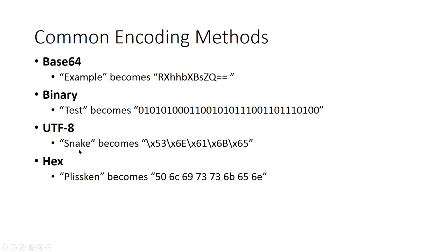UTF-8: the word 'snake' becomes \x53\x6E and so on and so forth. And then Hex — another common one. Lots of the time you'll see hex values used with coloring and that sort of stuff. The word 'Plissken' becomes 50, 6C, 69, 73, 73, 6B, 65, 6E. Noting that 73 and 73 represent the two S's — so whenever you see a duplicate letter, it's going to be represented by the same hex group of characters.